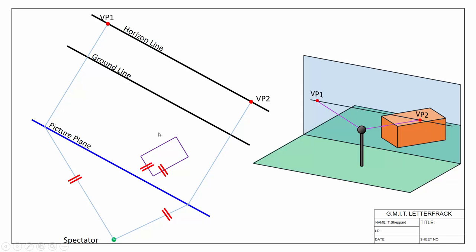We have our 2D version and our 3D version, with each corner away from the picture plane. From our previous examples we know that if there is no existing corner on the picture plane, none of our edges are going to appear true length. If the object is behind the picture plane they're all going to appear smaller than they actually are. If the object is in front of the picture plane, all our edges are going to appear larger than what they truly are.